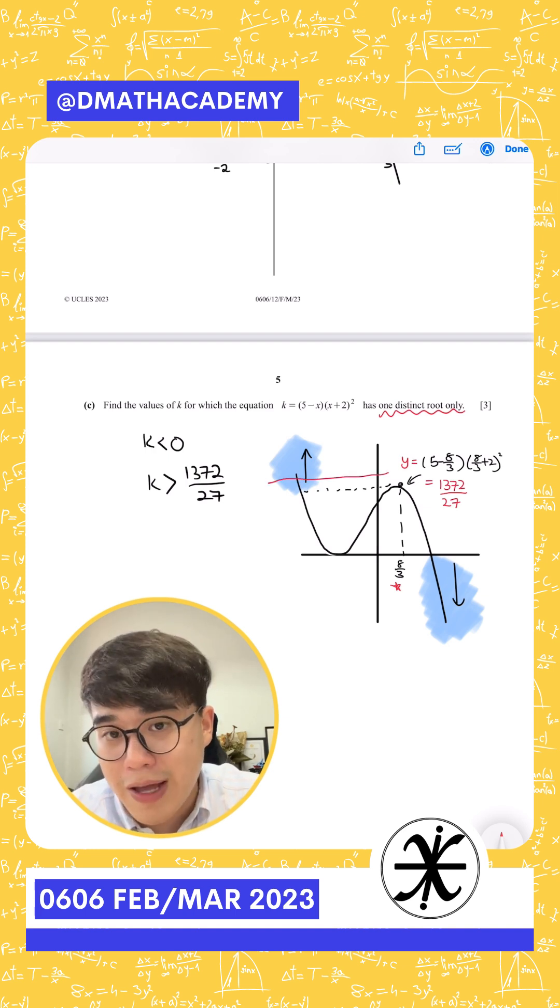So when you draw anything above that point, you have one intersection, while if you draw anything that was lesser than 0, you will get one intersection as well.